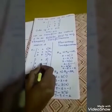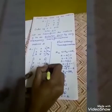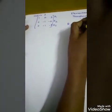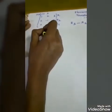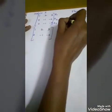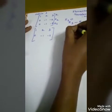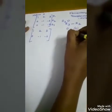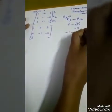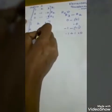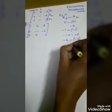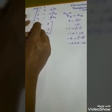Next step is R3 equals R3 minus R2. R1 and R2 have no changes. For R3: first element is 0 minus 0 equals 0. Next element is minus 1 minus (minus 1) equals minus 1 plus 1 equals 0. Next element is minus 2 minus (minus 2) equals minus 2 plus 2 equals 0. So we got the Echelon form.